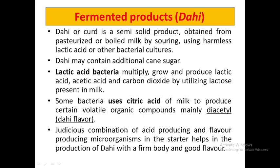Dahi may also contain cane sugar. When it is sweetened it is called mishti dahi, and when it is sour it is called musti dahi. Similarly, dahi can also be categorized as set type and stirred type. Dahi may also contain added sugar.